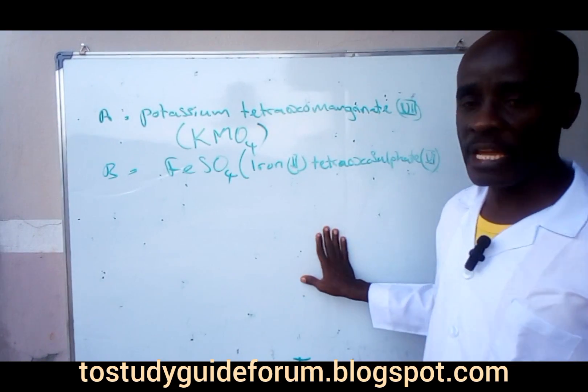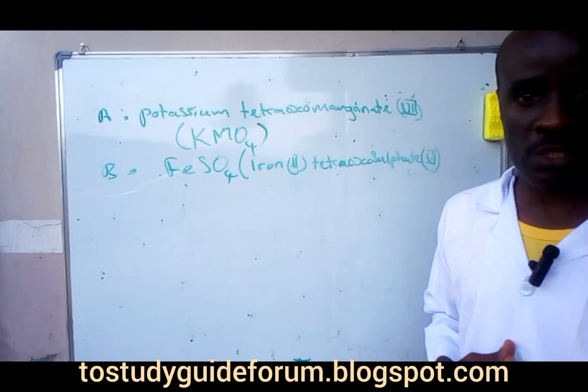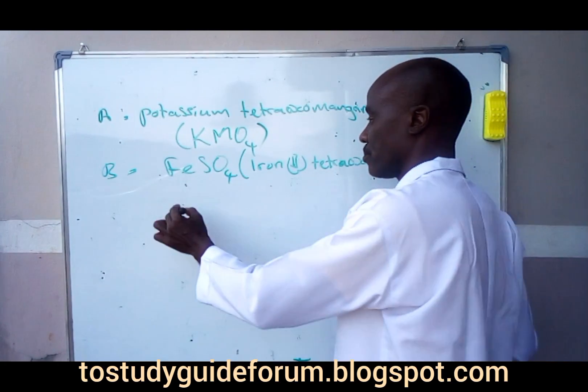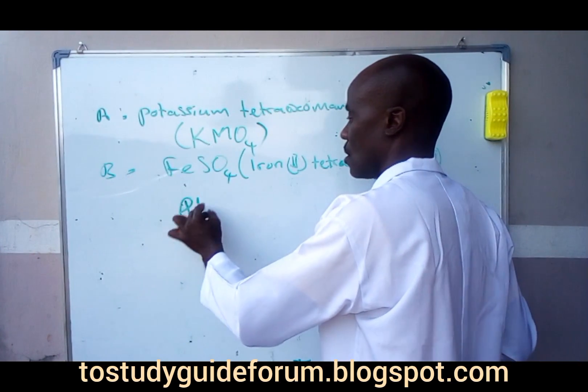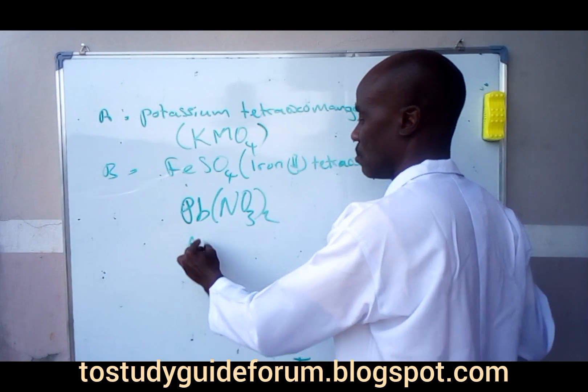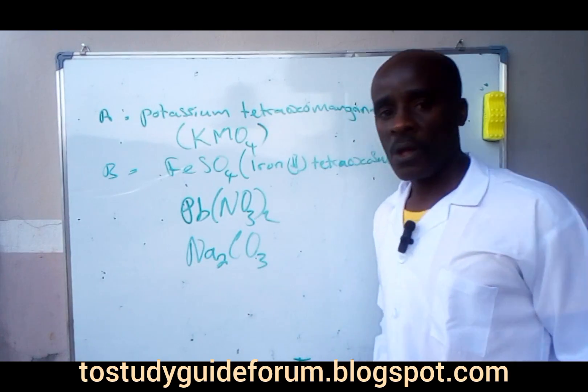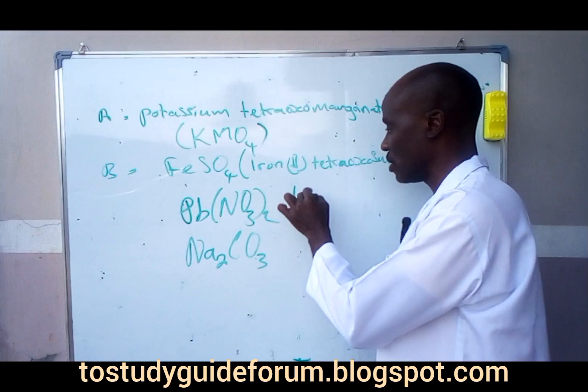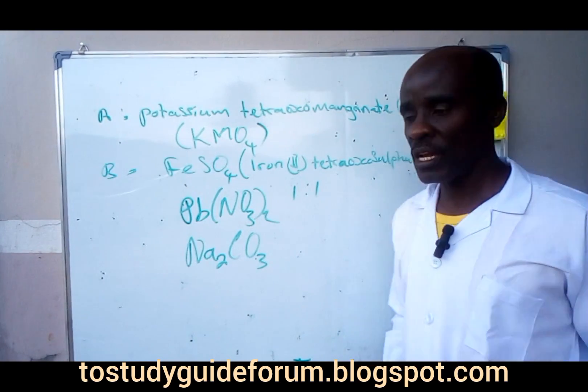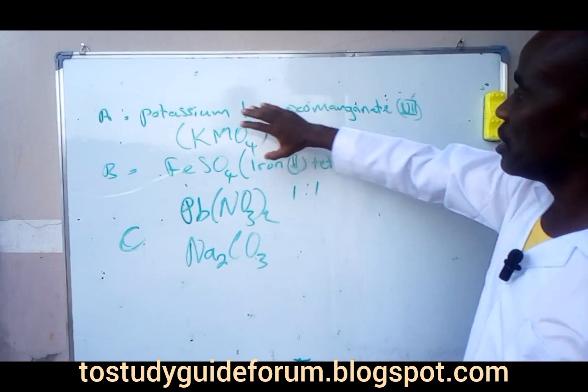In the quantitative analysis, we have a mixture of two salts. This mixture has to do with lead nitrate and sodium trioxocarbonate(IV). It's a mixture with a ratio of one to one. They should be expected to be aqueous.